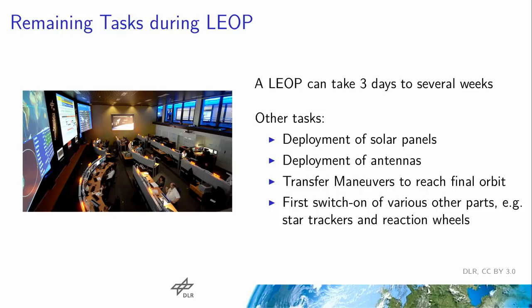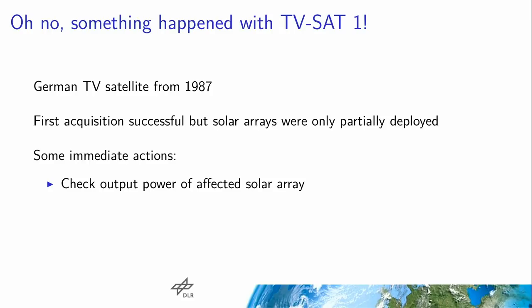Etwas anderes, was jetzt gerne angeschaltet wird, sind Reaktionsräder. Es sind im Prinzip Kreisel, die sich sehr, sehr schnell drehen. Man dreht sie hoch und das stabilisiert das Raumfahrzeug, denn man will ja die Rotation in den meisten Fällen direkt kontrollieren. Also, jetzt hoffen wir, dass alles wunderbar geklappt hat. Wir haben das Ding gestartet – aber es klappt nicht immer alles so, wie es sollte.